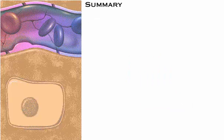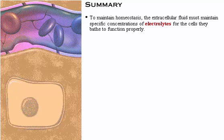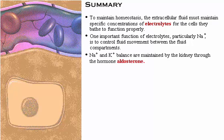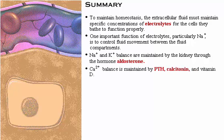To summarize: to maintain homeostasis, the extracellular fluid must maintain specific concentrations of electrolytes for the cells they bathe to function properly. One important function of electrolytes, particularly sodium, is to control fluid movement between fluid compartments. Sodium and potassium balance are maintained by the kidney through the hormone aldosterone. Calcium balance is maintained by parathyroid hormone, calcitonin, and vitamin D.